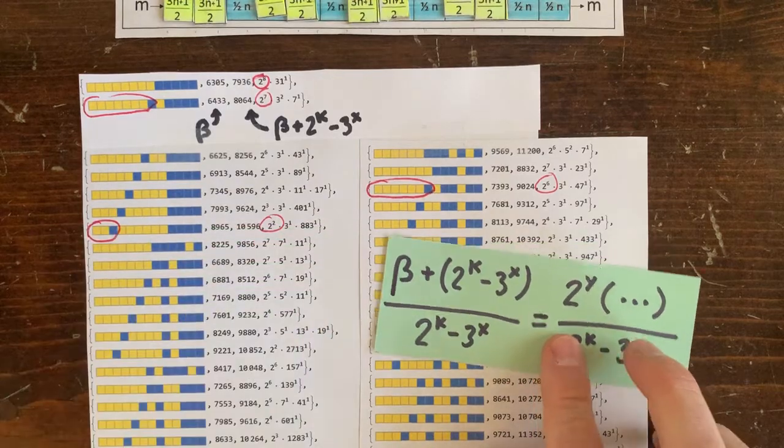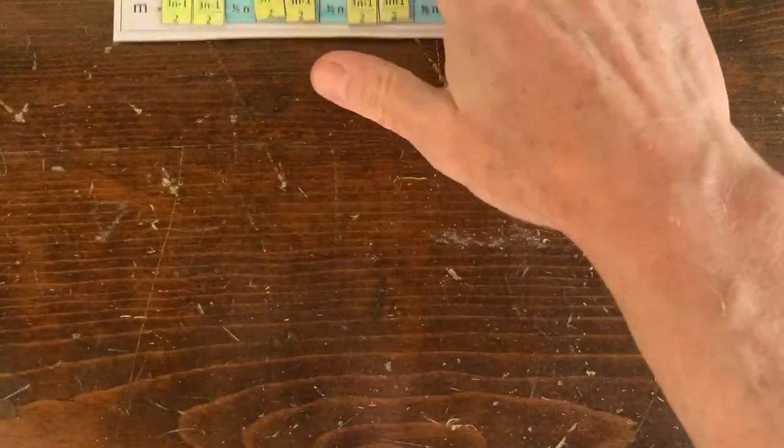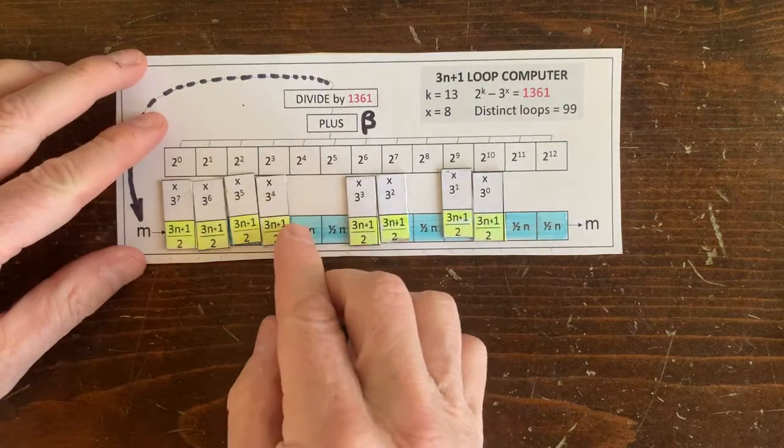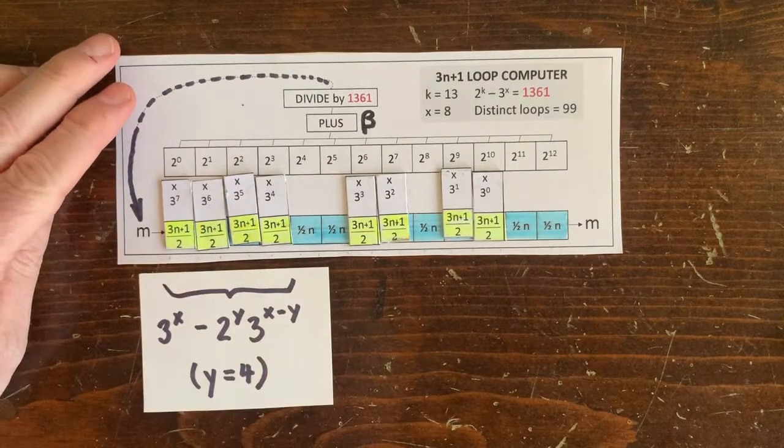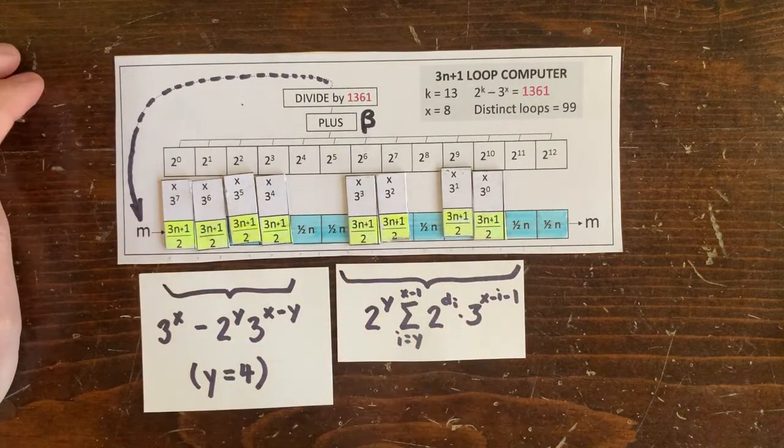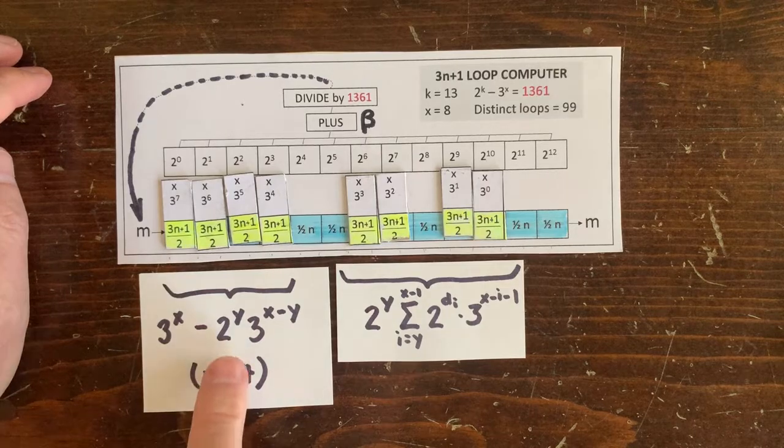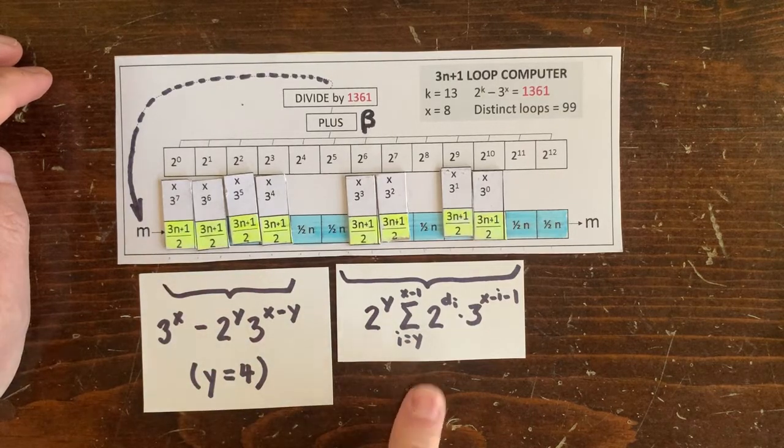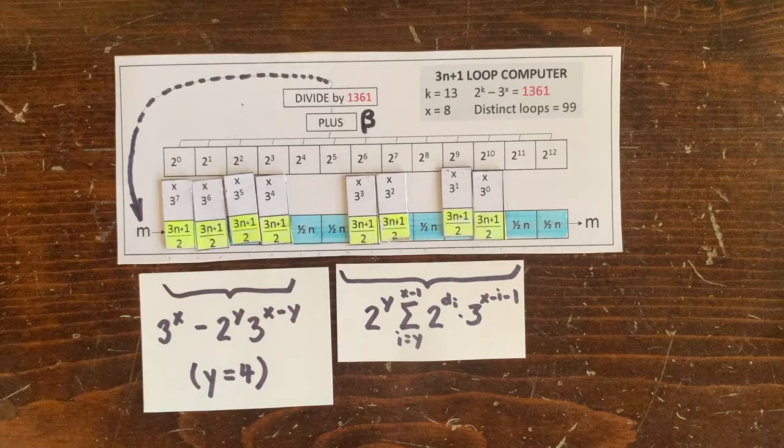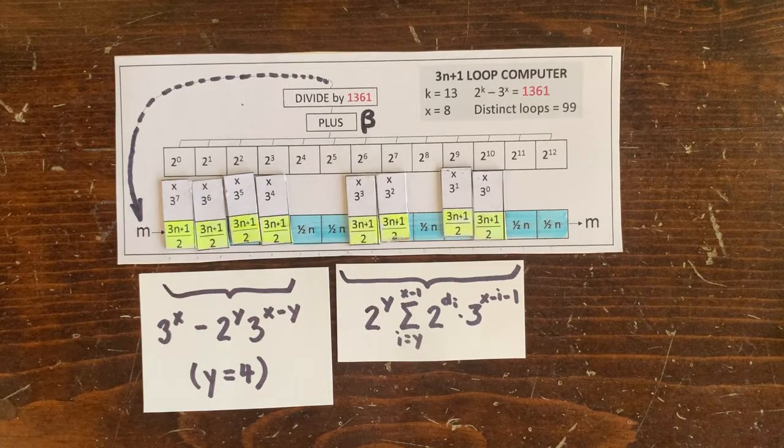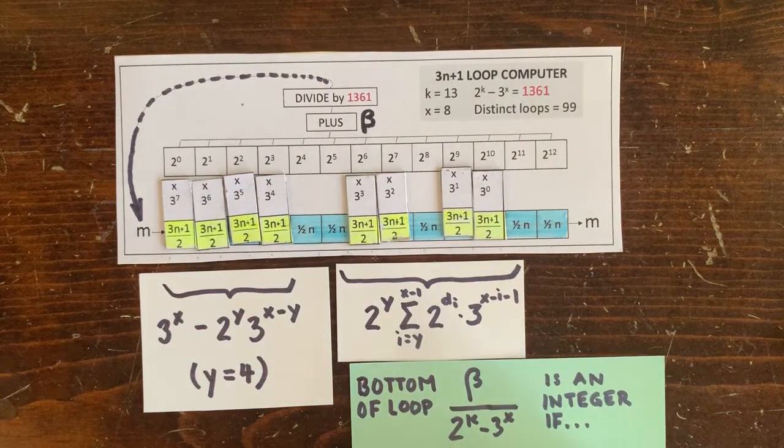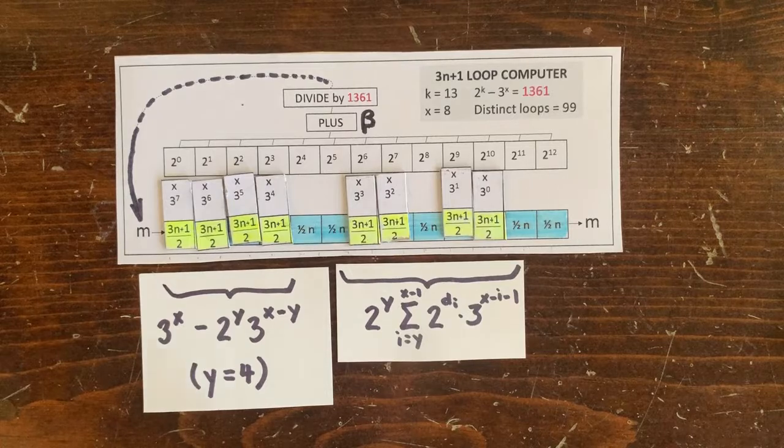Now, why do loops that start with y up moves have y factors of 2 here? Well, you just need a little algebra. Beta is the sum of these two things. And if we add 2 to the k minus 3 to the x to beta, it cancels the 3 to the x's, leaving every term divisible by 2 to the y.